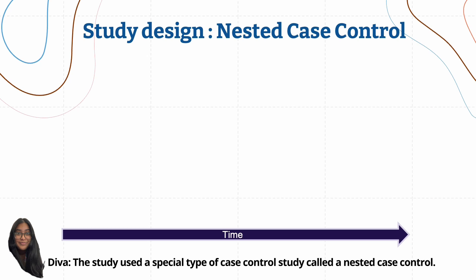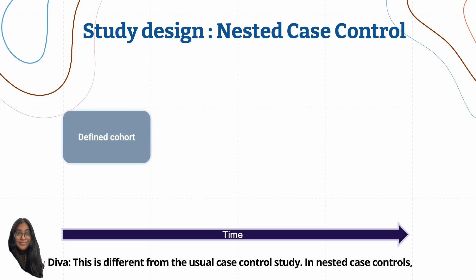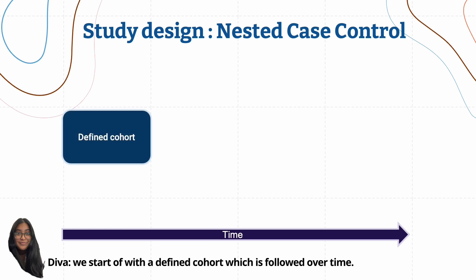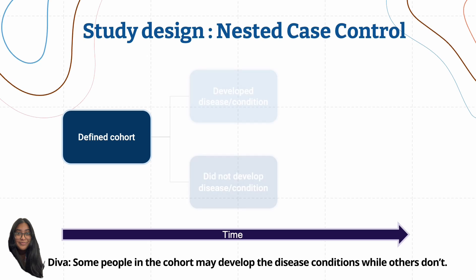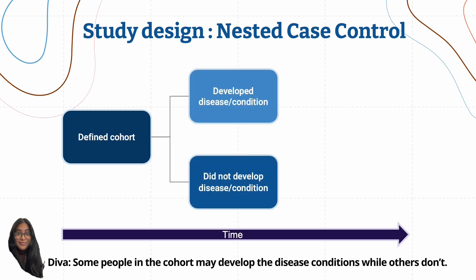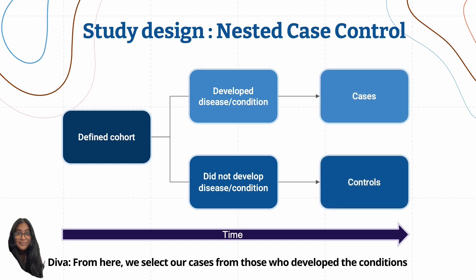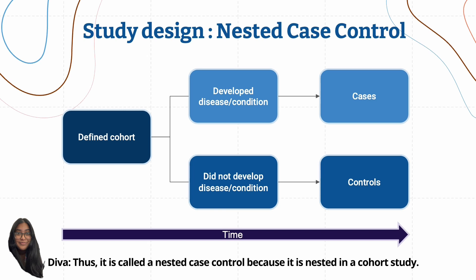The study used a special type of case control study called a nested case control. This is different from the usual case control study. In nested case controls, we start off with a defined cohort which is followed over time. Some people in the cohort may develop the disease condition while others don't. From here, we select our cases from those who developed the condition and controls from those who didn't. Thus, it is called a nested case control because it is nested in a cohort study.